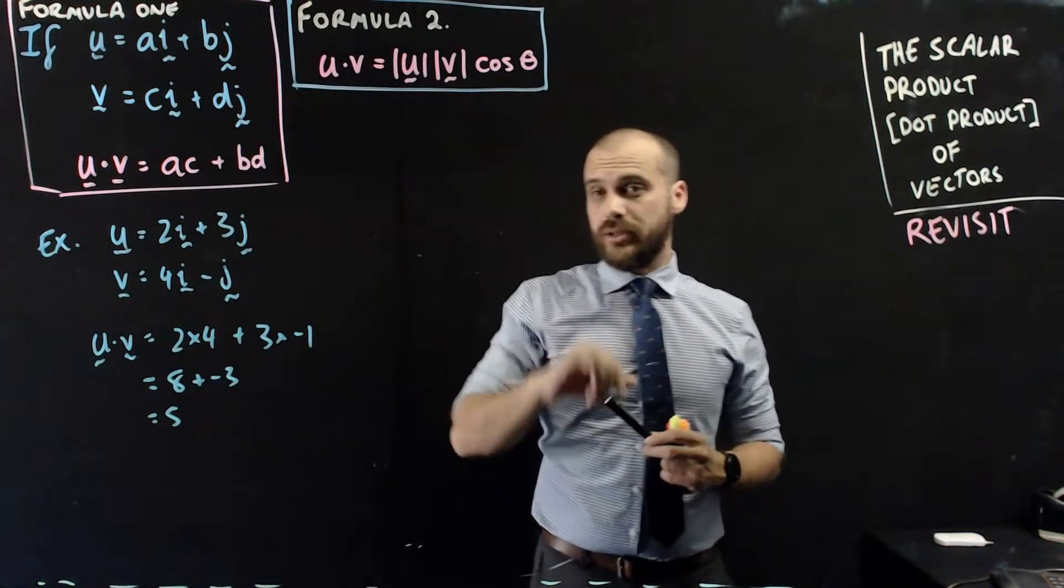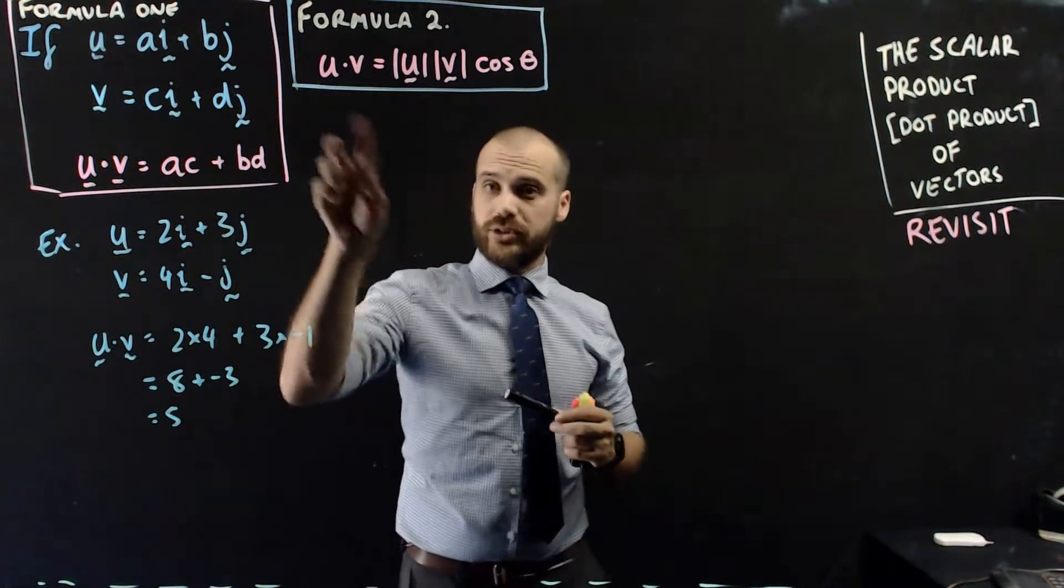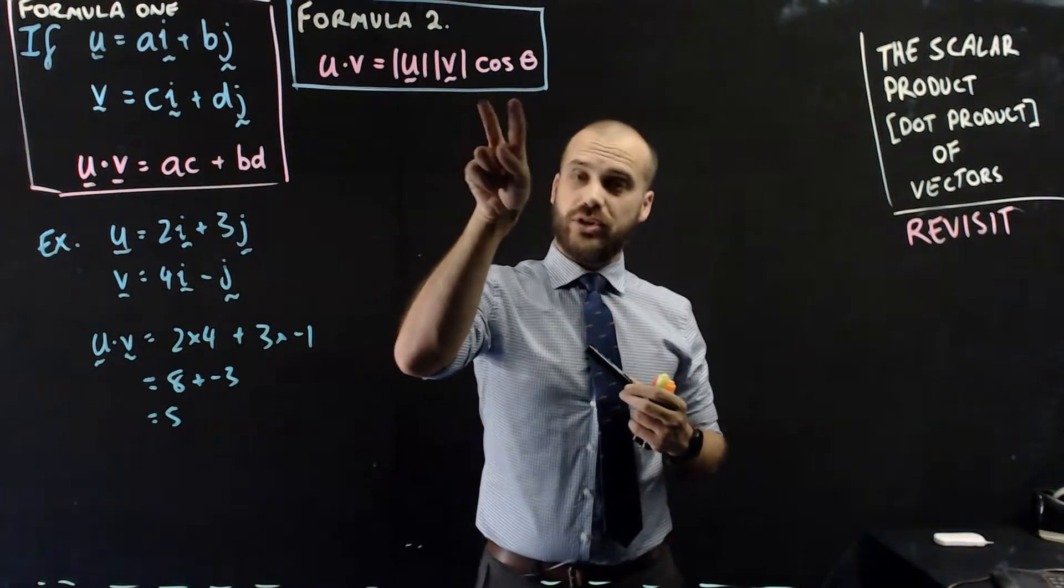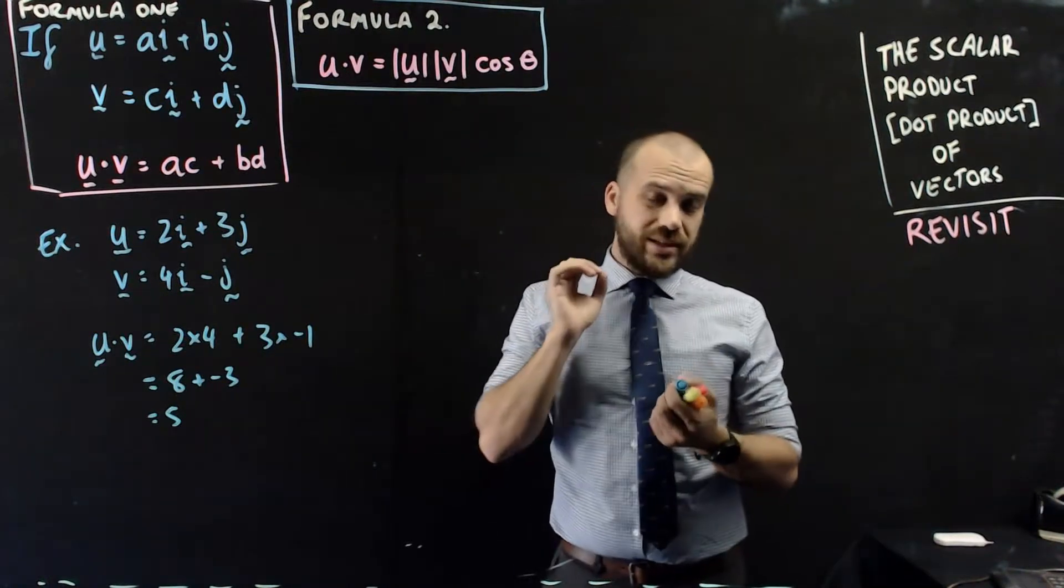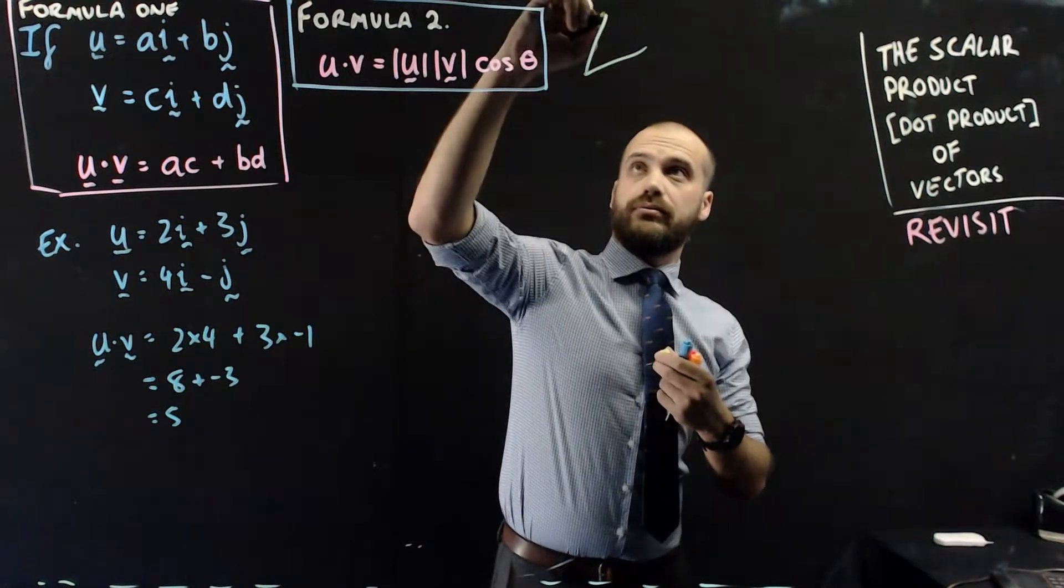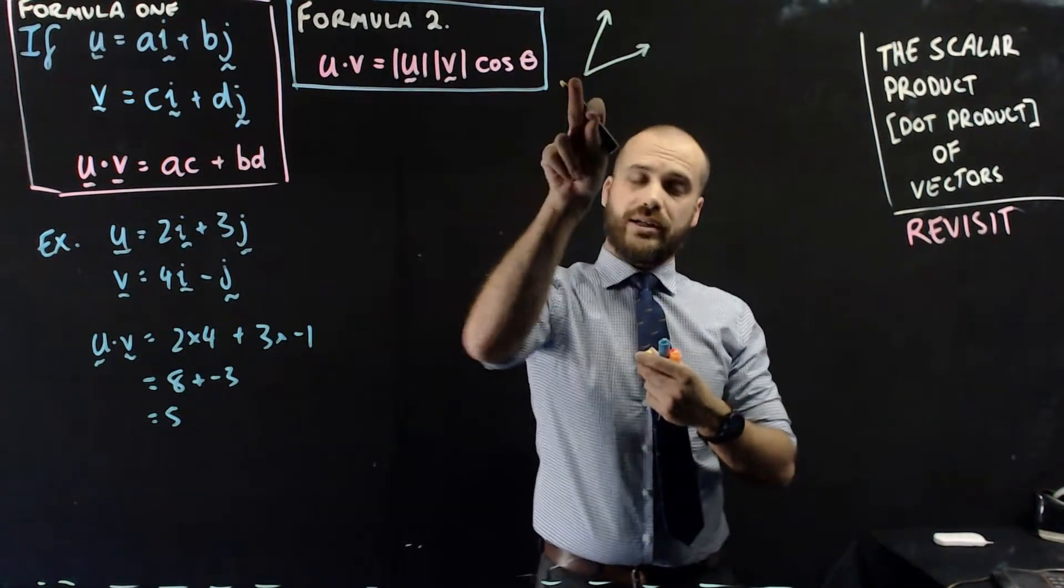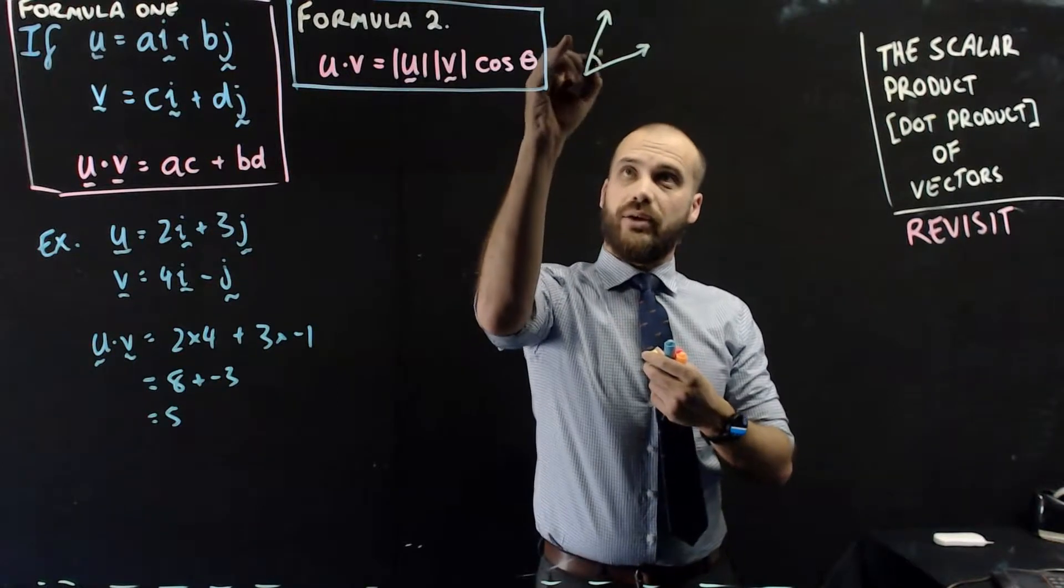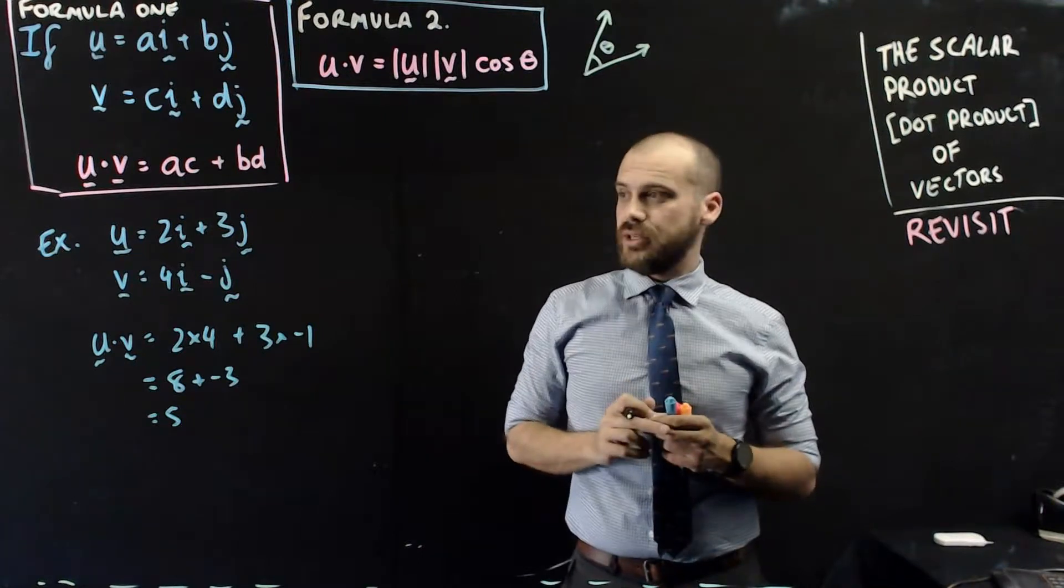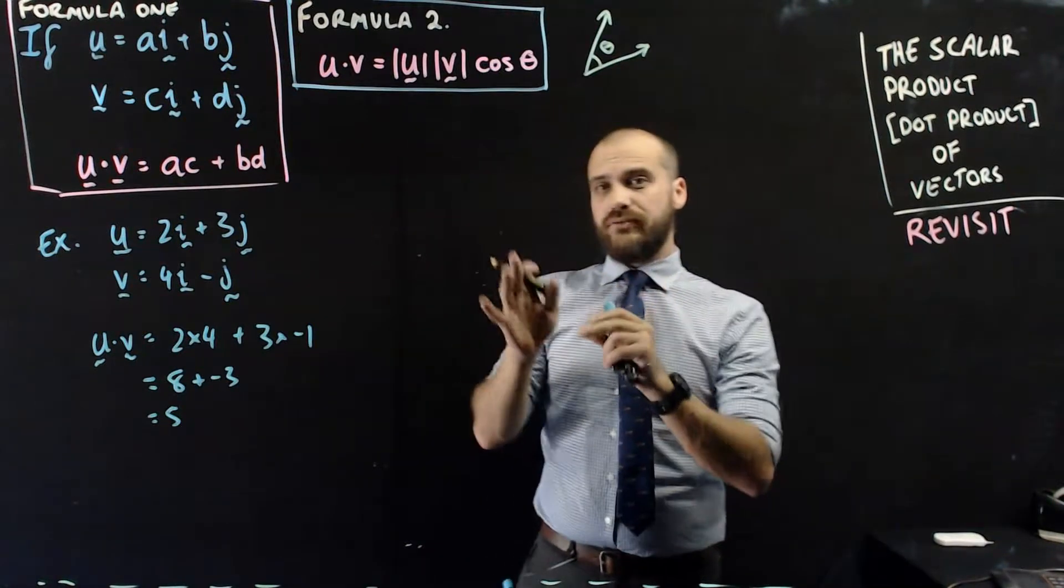There is another formula for the dot product that you should be familiar with. Here's our second formula. The dot product of u and v is equal to the magnitude of u times the magnitude of v times cos theta, where theta is the angle between the two vectors. If we put them tail to tail and we find that angle there, that's what theta is, the angle between the two vectors. What can we do with that formula?